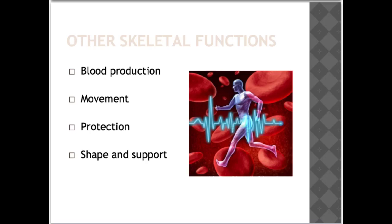Red blood cells have the job of carrying oxygen to the muscles, while white blood cells fight infection. With movement, muscles are attached to bones by tendons — this enables movement. The skeleton has a variety of different joints which allow the body to move in a wide range of ways and directions.